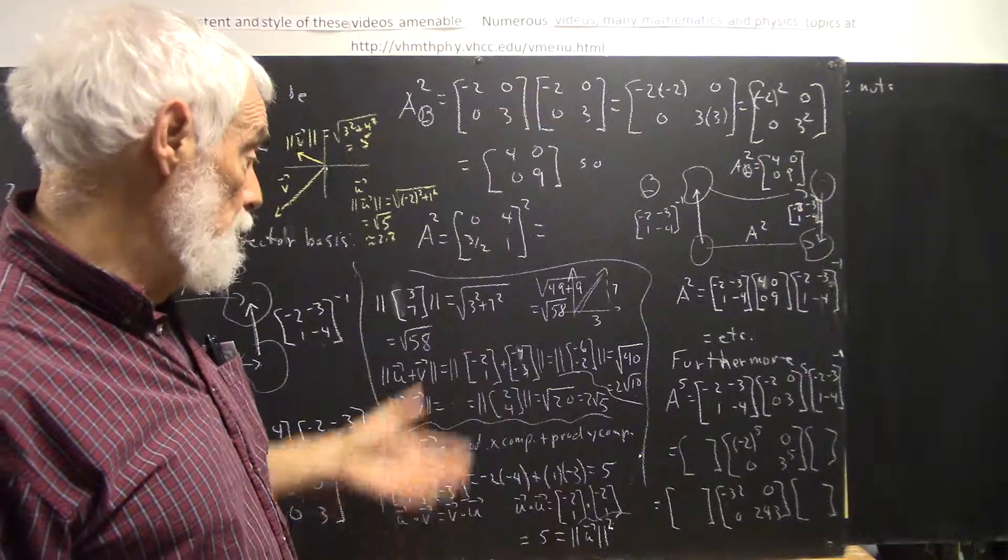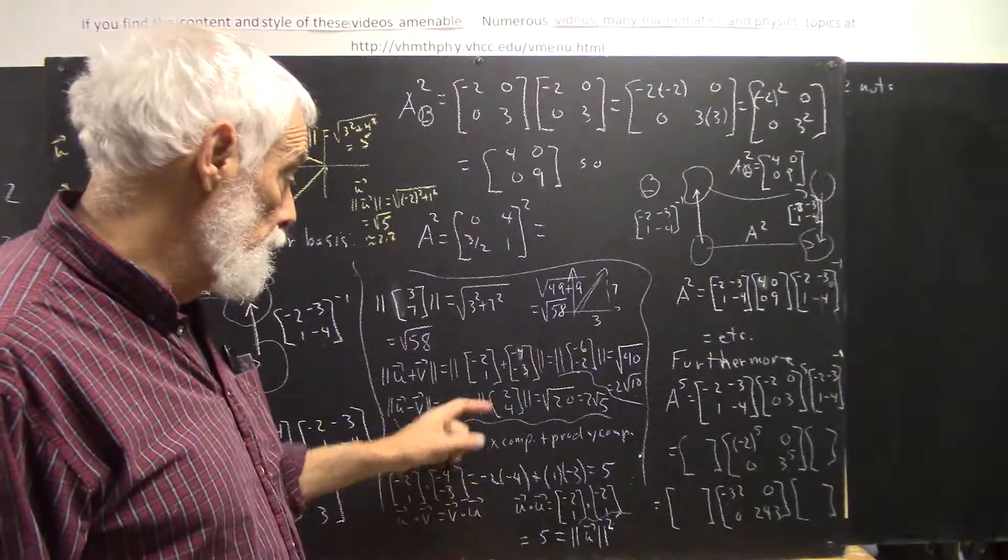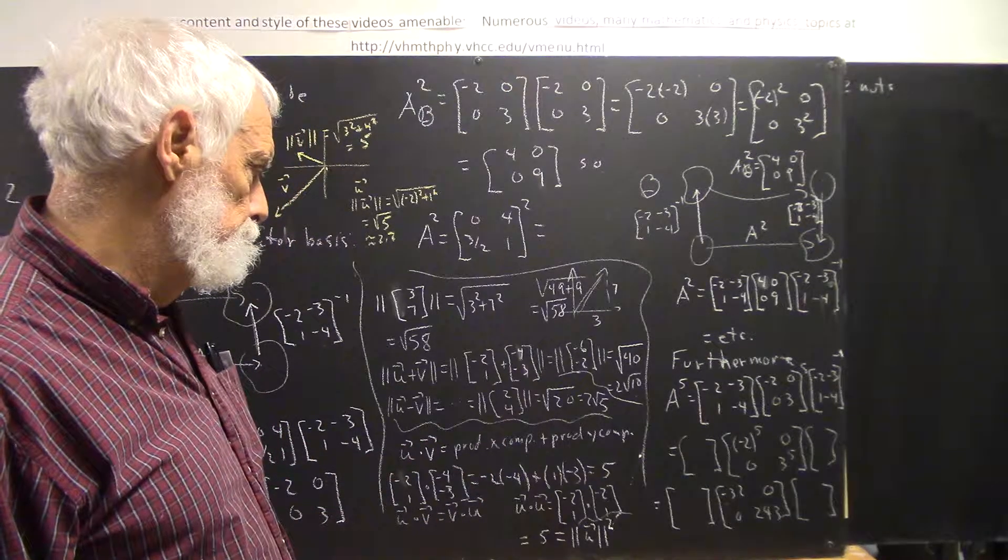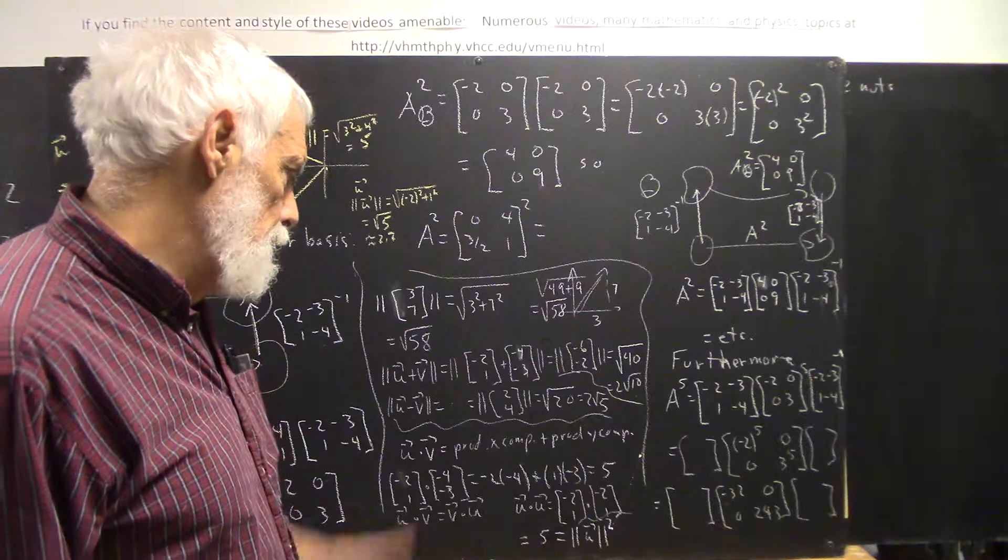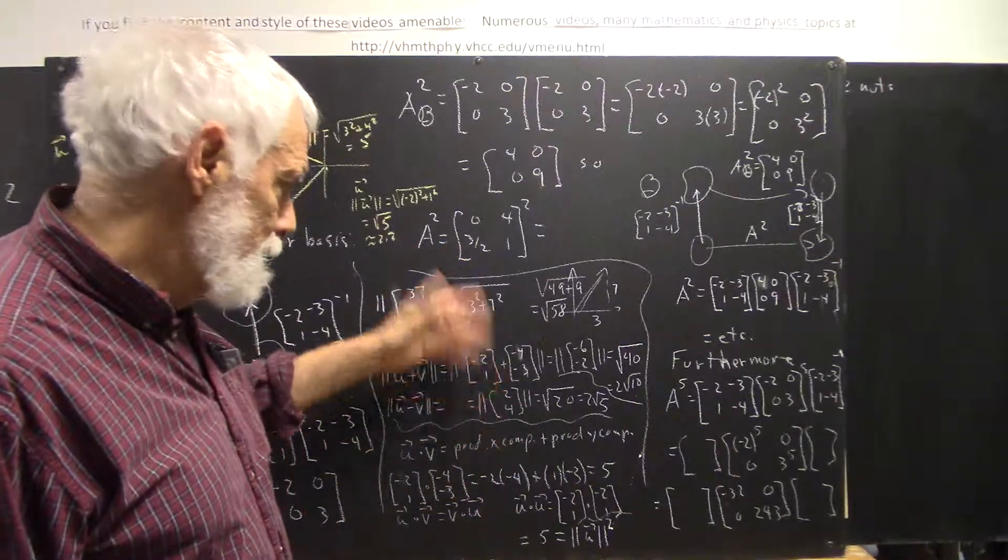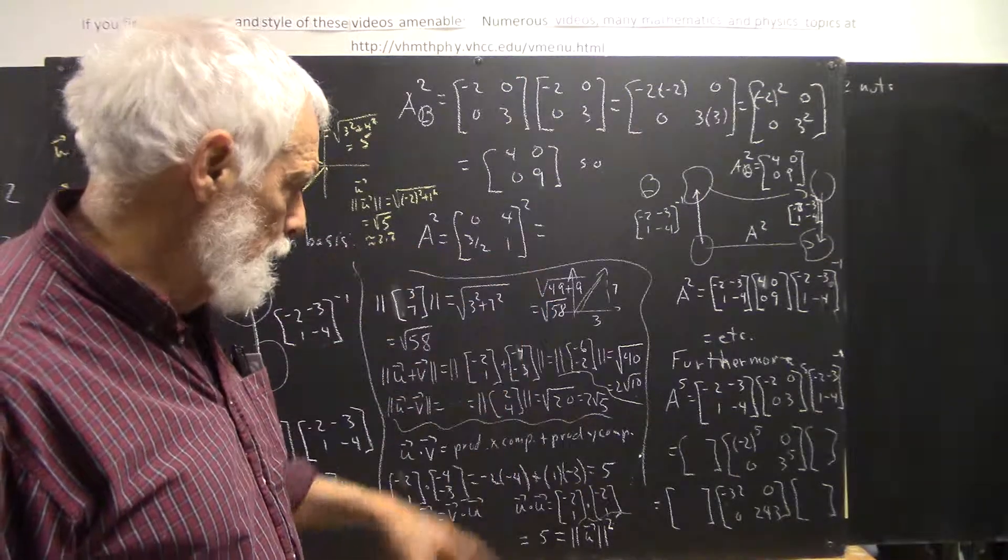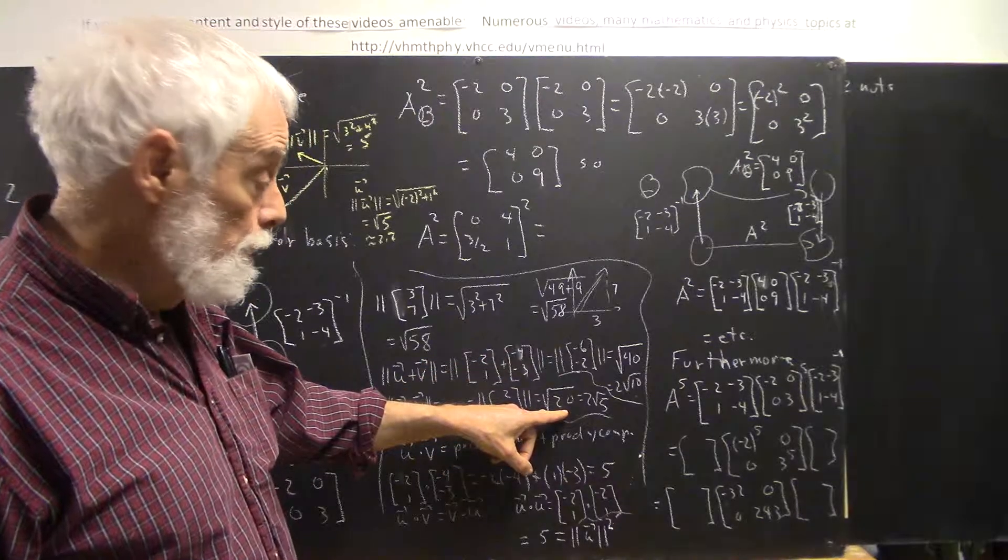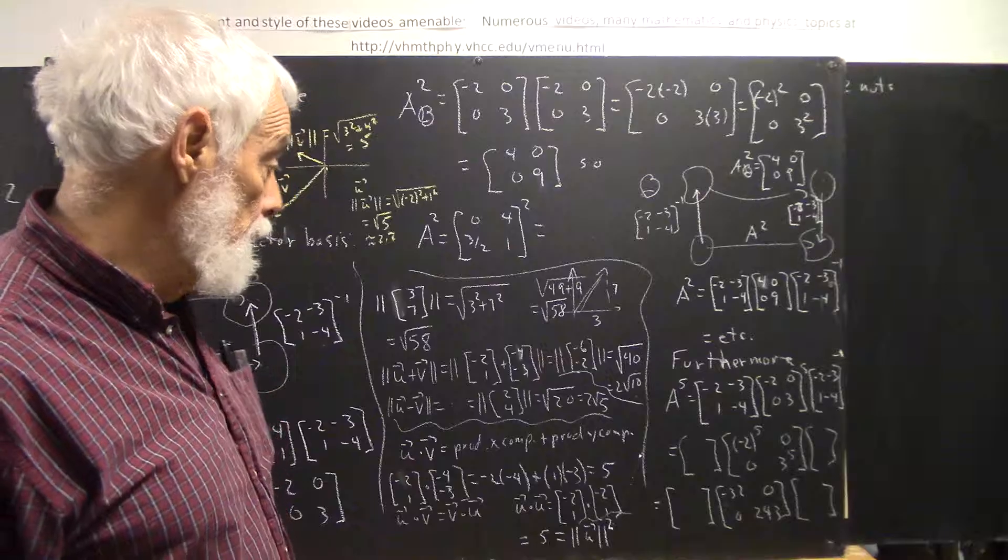Magnitude of u minus v—well, we just subtract the two vectors, we get (2, 4). And the magnitude of that, I just stopped for a minute to check my signs here, but I think it's correct. We get the square root of 20, which is 2 times the square root of 5.